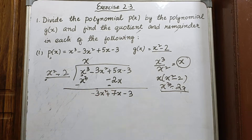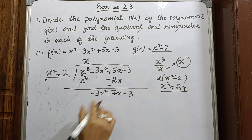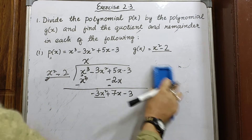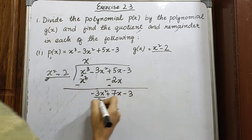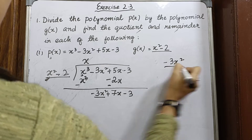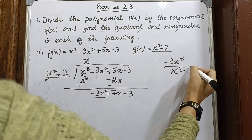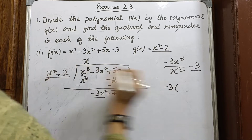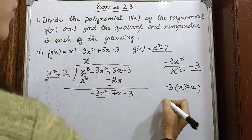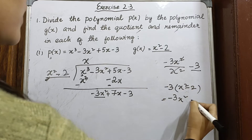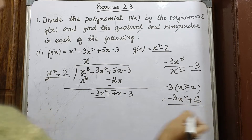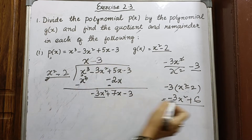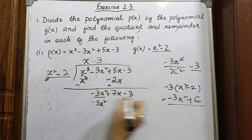Now we divide again by the divisor. Take the first term: minus 3x² divided by x² gives minus 3. We multiply the whole divisor by minus 3: minus 3 into x² minus 2 gives minus 3x² plus 6.